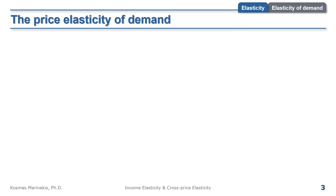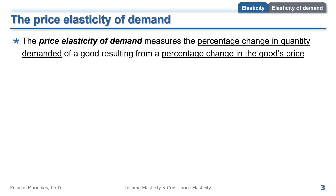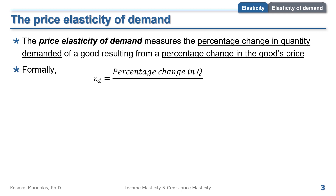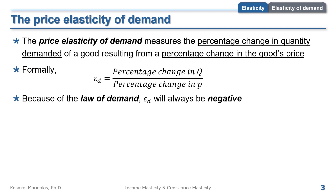Let's start with price elasticity of demand first. The price elasticity of demand measures the percentage change in quantity demanded of a good, resulting from a percentage change in the good's price. We usually denote elasticity of demand with the Greek letter epsilon. Elasticity of demand equals the ratio of percentage change in Q over the percentage change in P. Because of the law of demand, elasticity of demand is always negative, since a change in P causes a change in Q in the opposite direction.